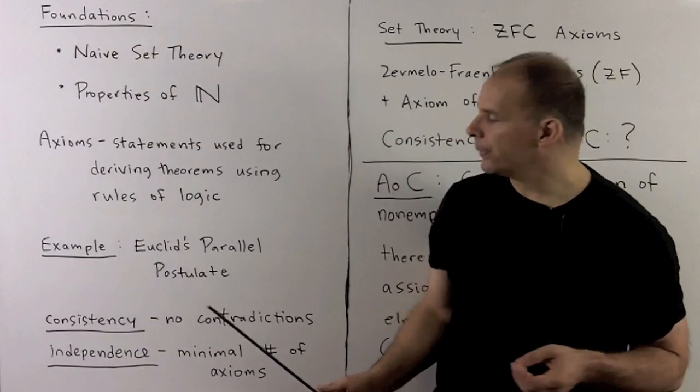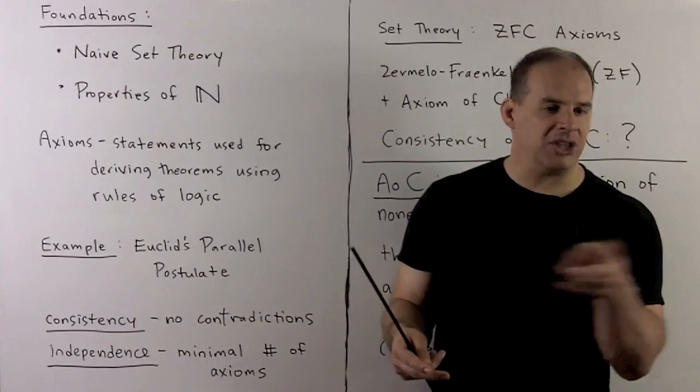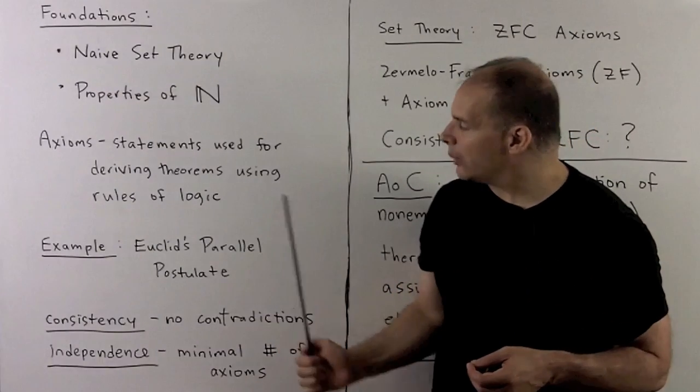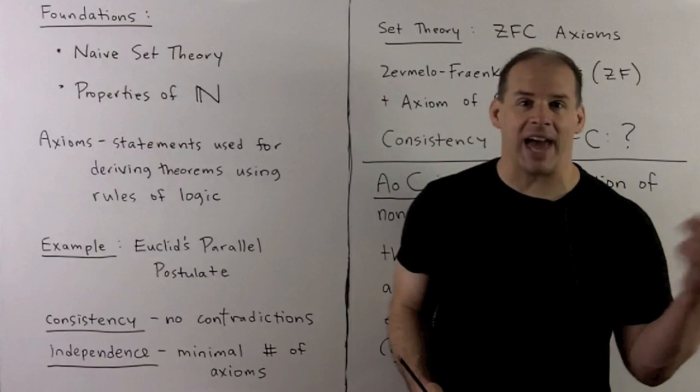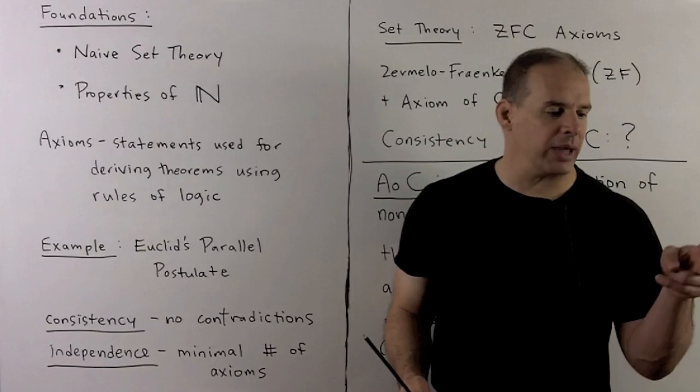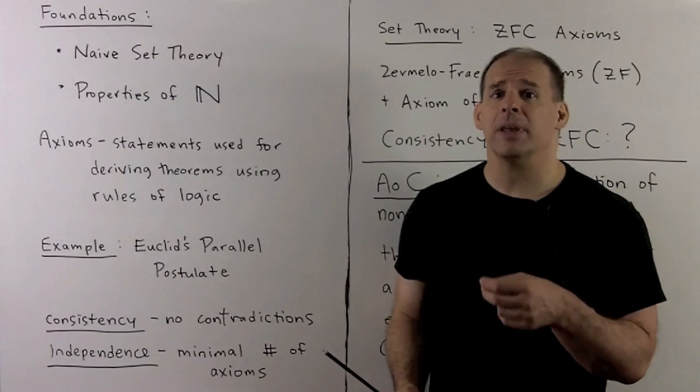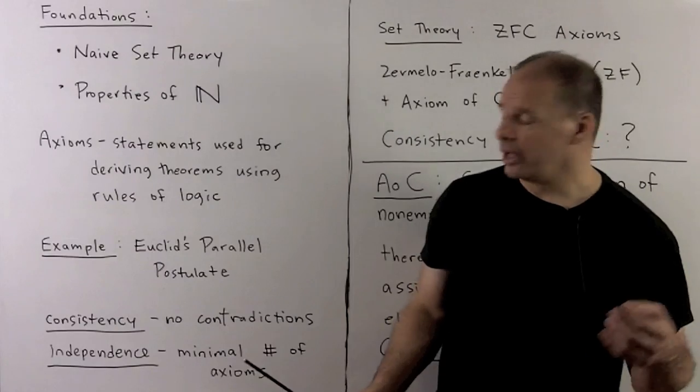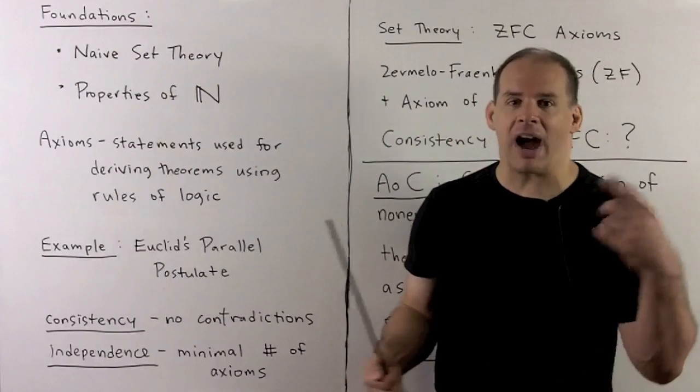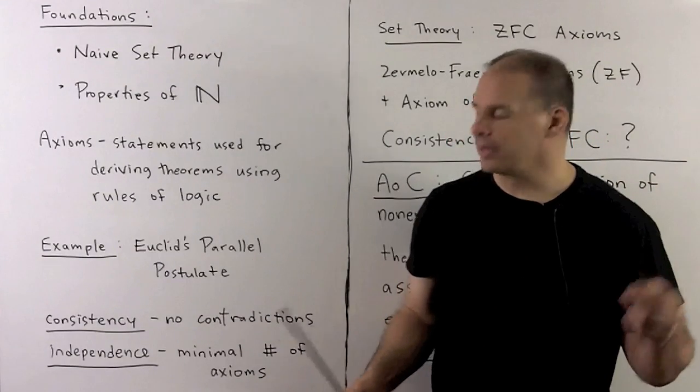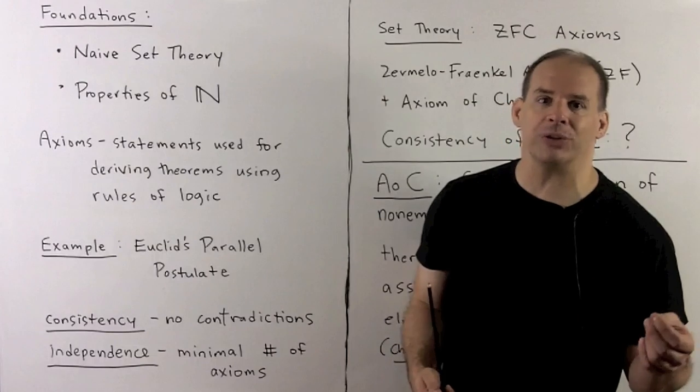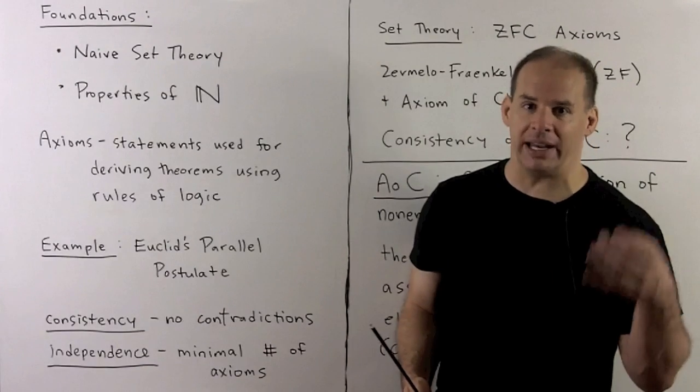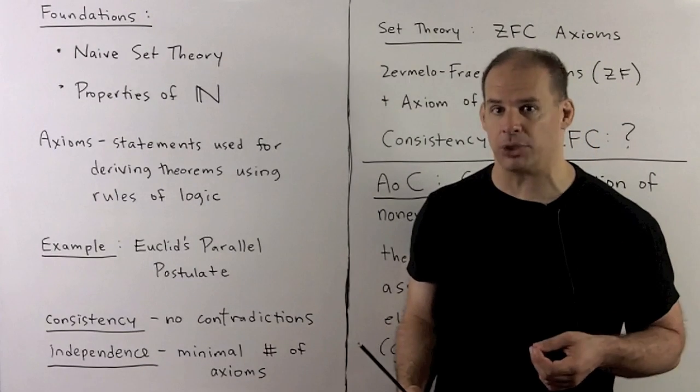For example, for Euclid's Elements, we're doing plane geometry. Turns out we need to take the parallel postulate on as an axiom. That says if we have parallel lines in the plane, they do not intersect. The parallel postulate can't be derived from the remaining axioms. If we leave it out, there are other geometries that fit the remaining axioms that are not plane geometry.